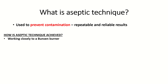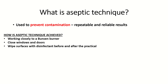The first thing that is recommended is to work closely to a Bunsen burner. This keeps the environment as sterile as possible and it also produces a convection current that carries the bacteria in the air away from your apparatus, so your agar plate. Close windows and doors, again to stop airflow carrying bacteria. Wipe surfaces with disinfectant or antibacterial spray before and after the practical, again to prevent contamination of unwanted bacteria.